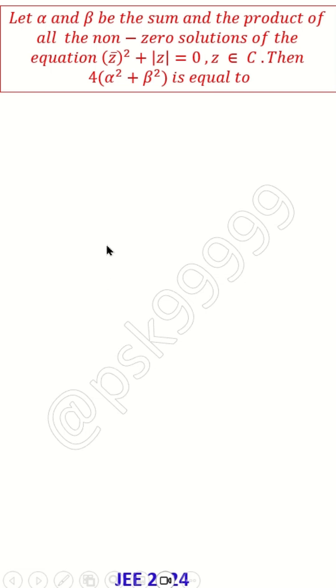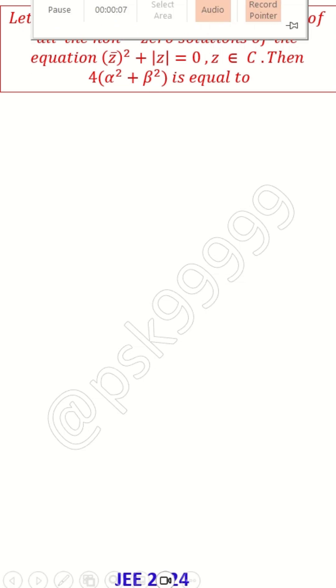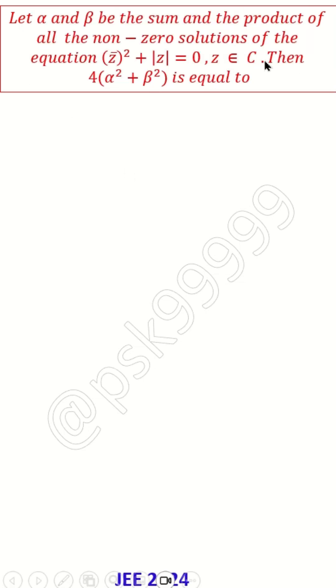Let alpha and beta be the sum and product of all the non-zero solutions of equation z̄² + |z| = 0, where z ∈ ℂ. Then what is the value of 4(α² + β²)?